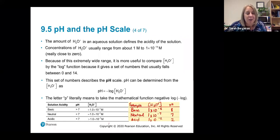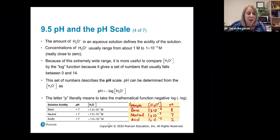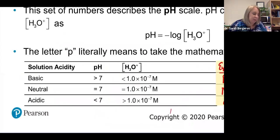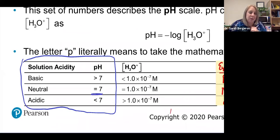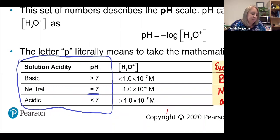These numbers are our pH scale. The P means negative log of the hydrogen concentration. So pH is equal to the negative log of the concentration of H₃O plus. If something is neutral, we say that is pH 7 — which tells you that your hydronium concentration is 1×10⁻⁷.